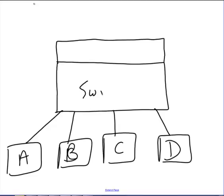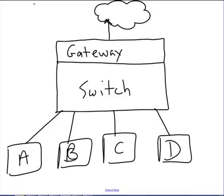I'm going to make this a switch and incorporate it into the same box. I'm going to put a device called a gateway. What a gateway does is it allows us to talk to other networks, like, for example, the internet.